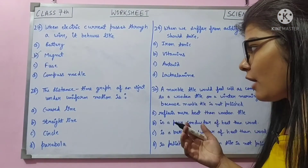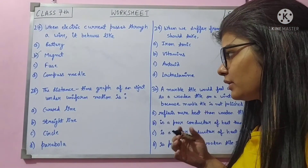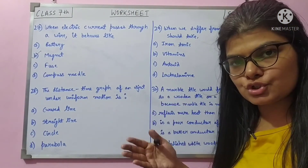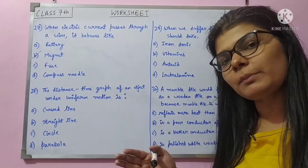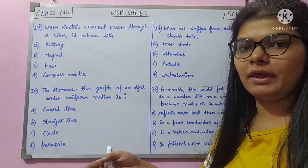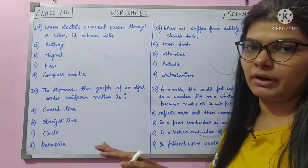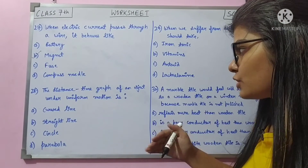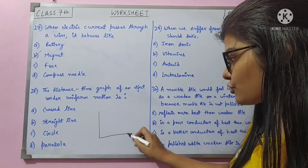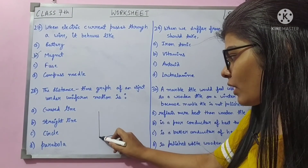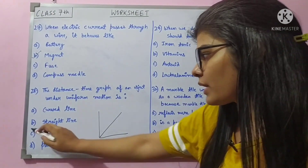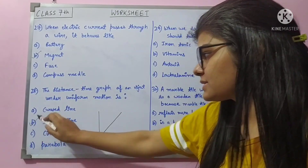Question 28: the distance-time graph of an object under uniform motion — uniform motion means same speed and same direction. The graph for that will be a straight line. Answer is B — straight line.